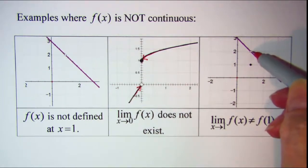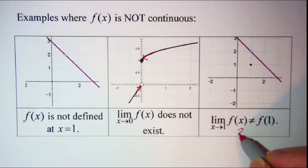The limit of f of x as x approaches 1 is 2 and that is not equal to f of 1 which is 1.